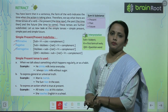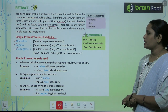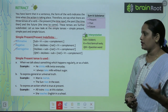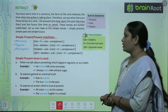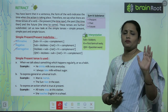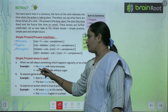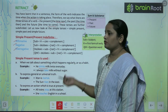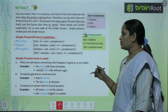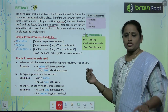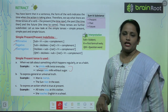Simple present tense is used when we talk about something which happens regularly or as a habit — something that is happening daily. For example: 'He drinks milk twice every day' — the action of drinking happens daily, so we add 's' to 'drink' with 'he'. Another example: 'I always take milk without sugar' — this also talks about a daily habit.